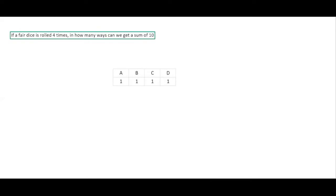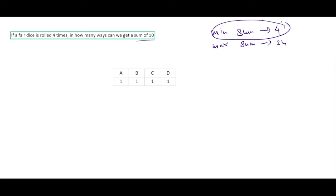Now let's find how many ways to get a sum of 10 with a die rolled four times. The minimum sum is 4 and the maximum is 24; sum 10 is closer to the minimum. Starting from the minimum, distribute 1 to each outcome (sum = 4), then we need to distribute 6 more. Without restrictions, distributing 6 into 4 outcomes gives (6 + 4 − 1) C (4 − 1) = 9C3 = 84 ways.